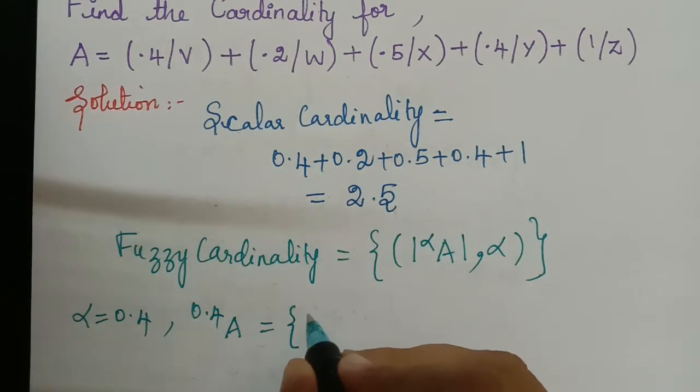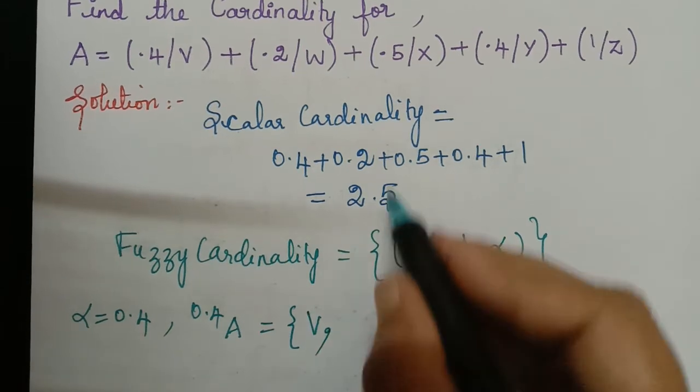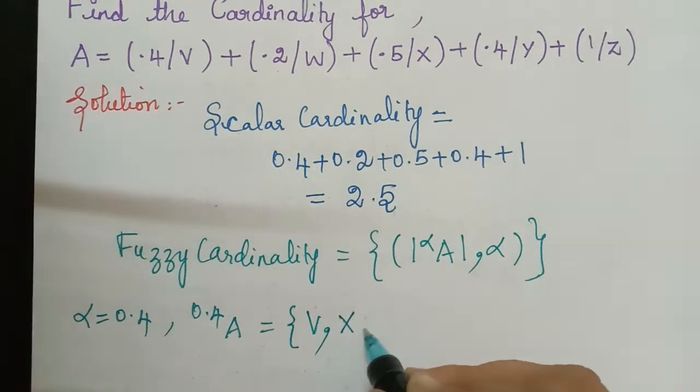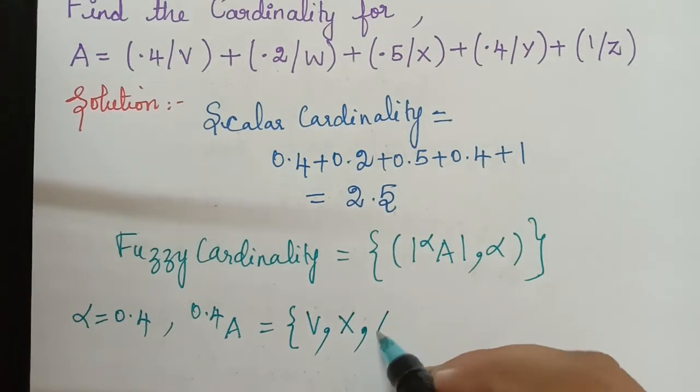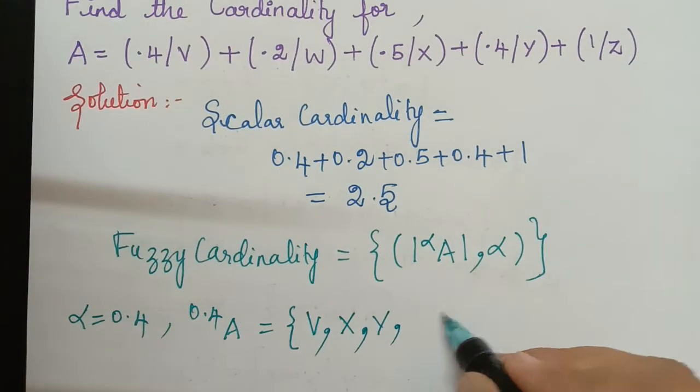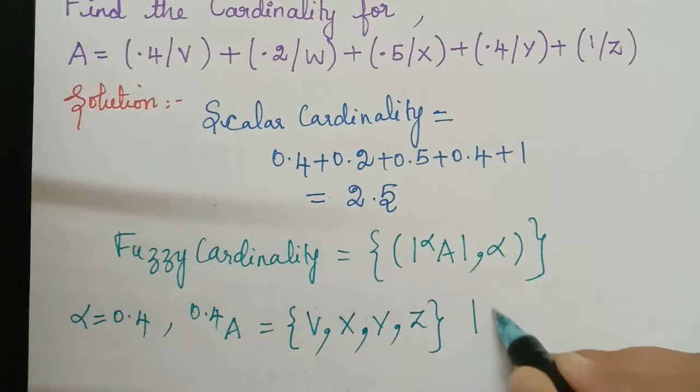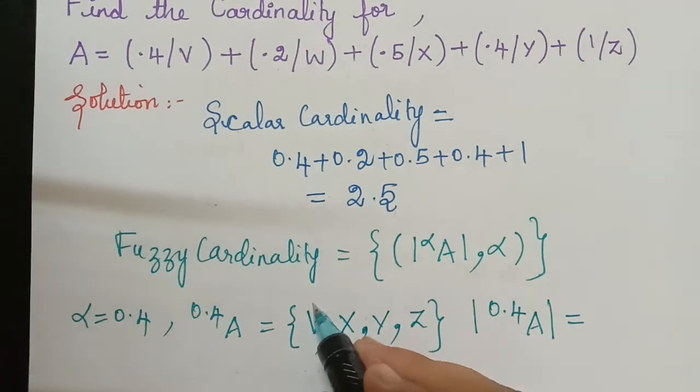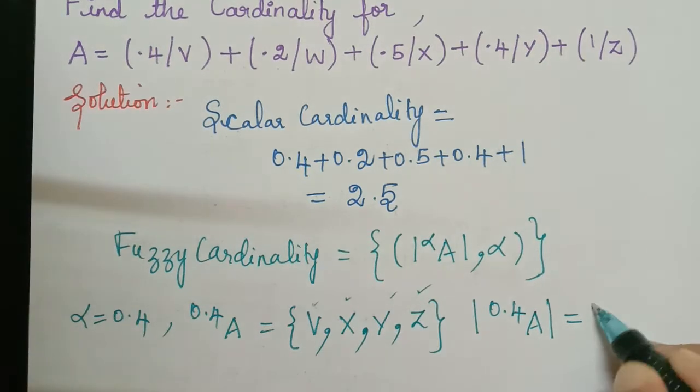And so the elements that fall into the set will be V and then this is lesser so it won't come here, X and then Y and Z. So therefore what will be modulus of 0.4 cut of A? It will be equal to 1, 2, 3, 4. So it is 4.